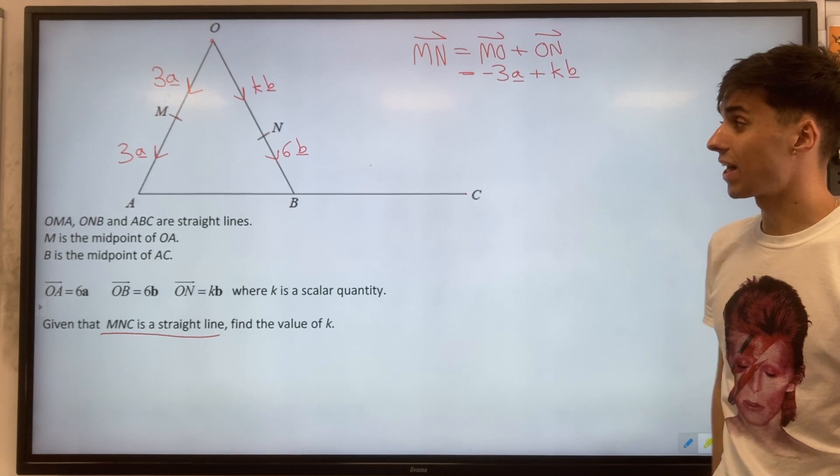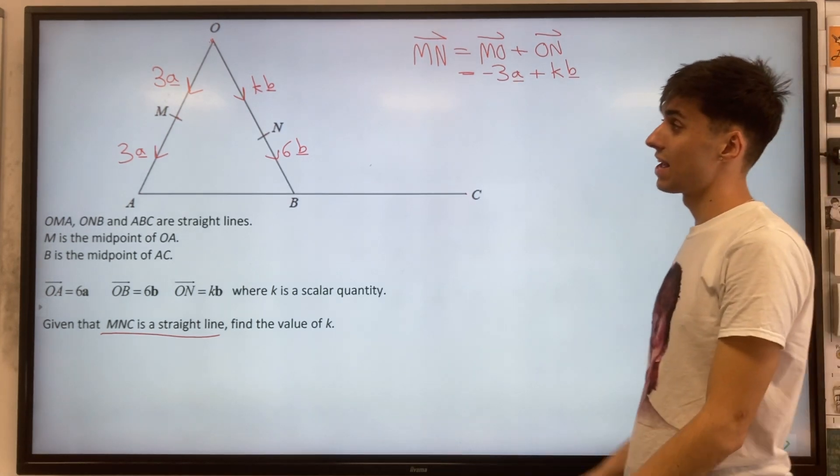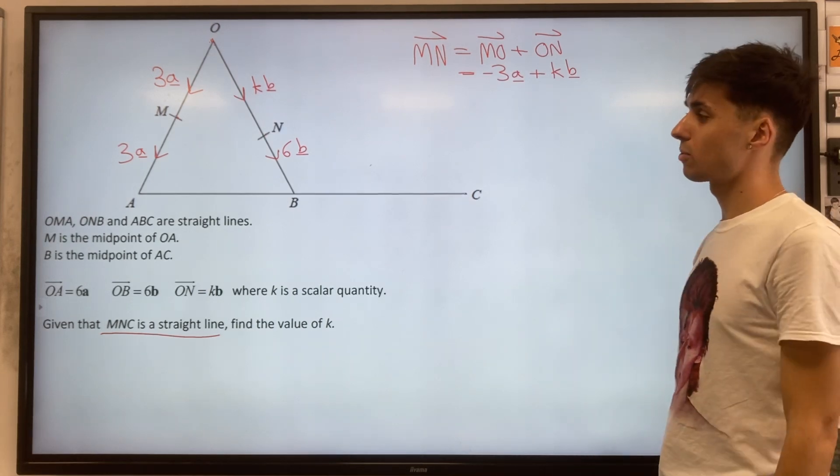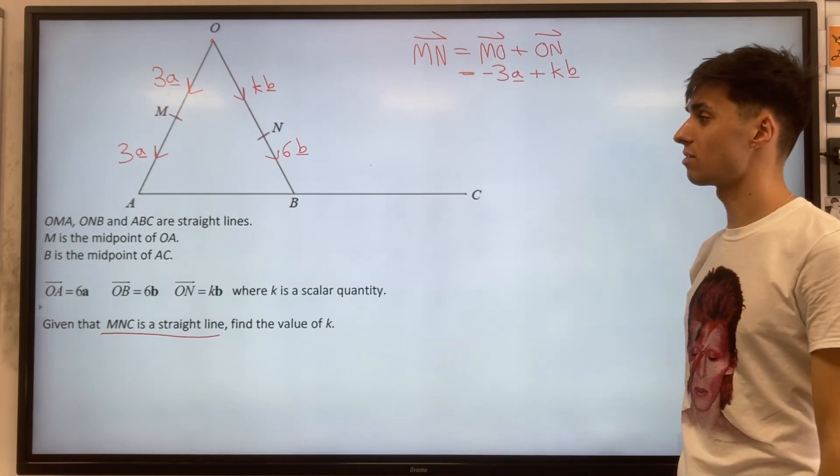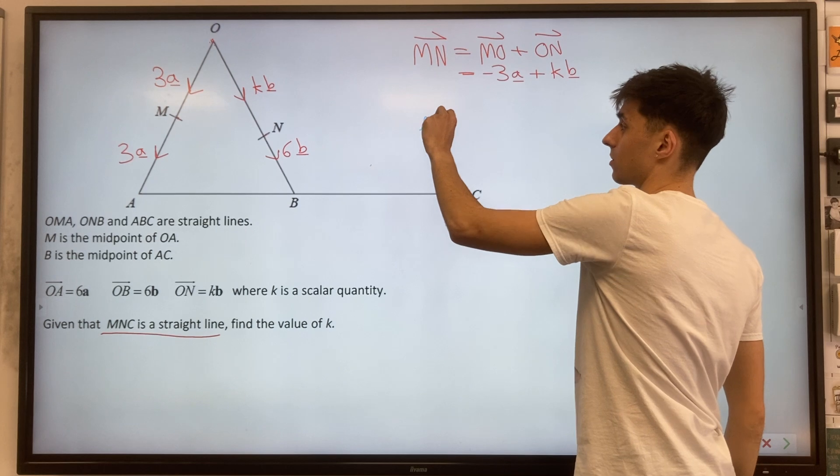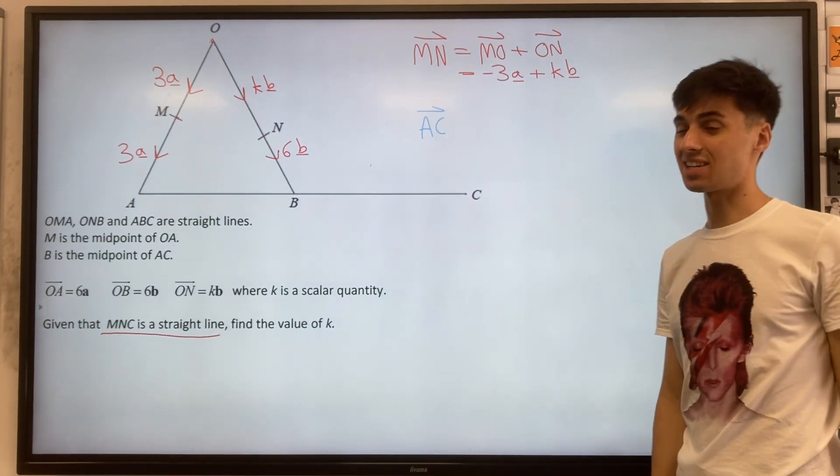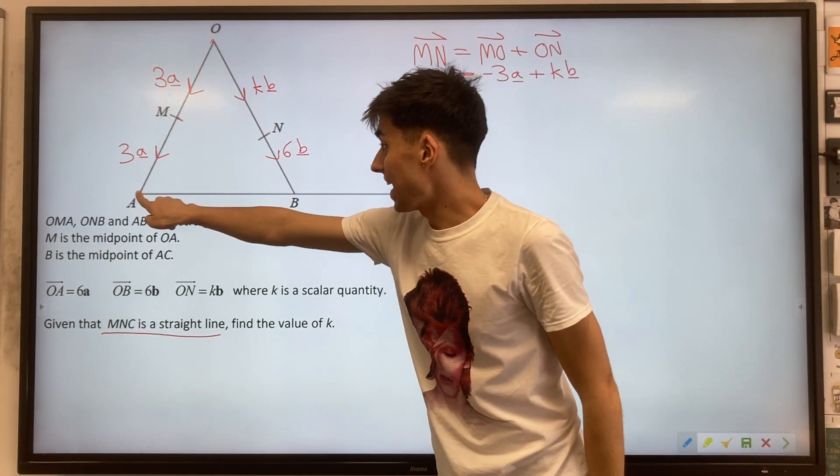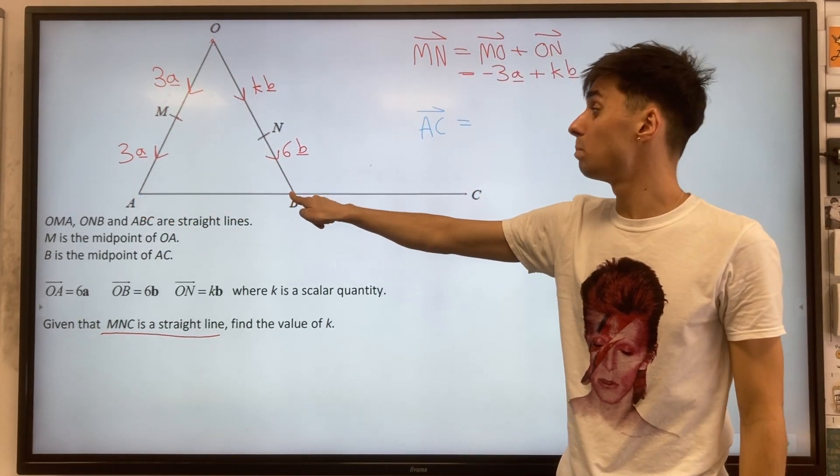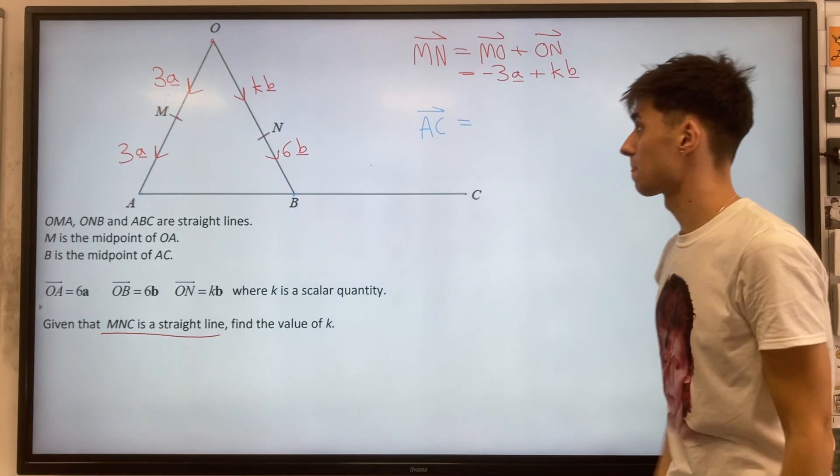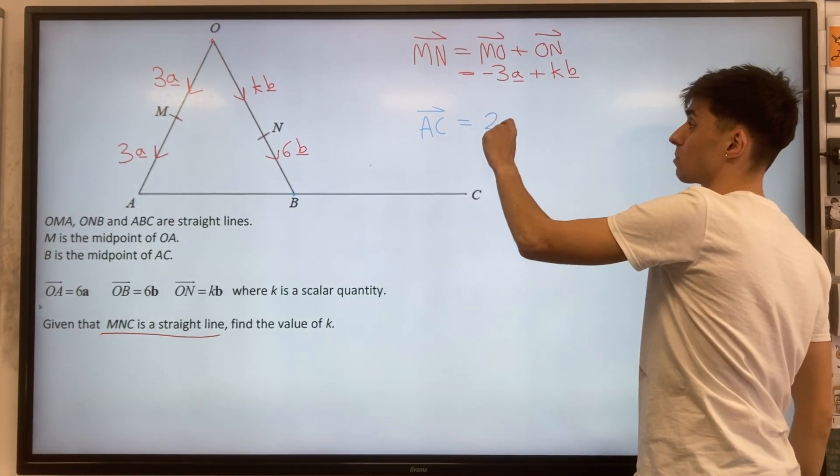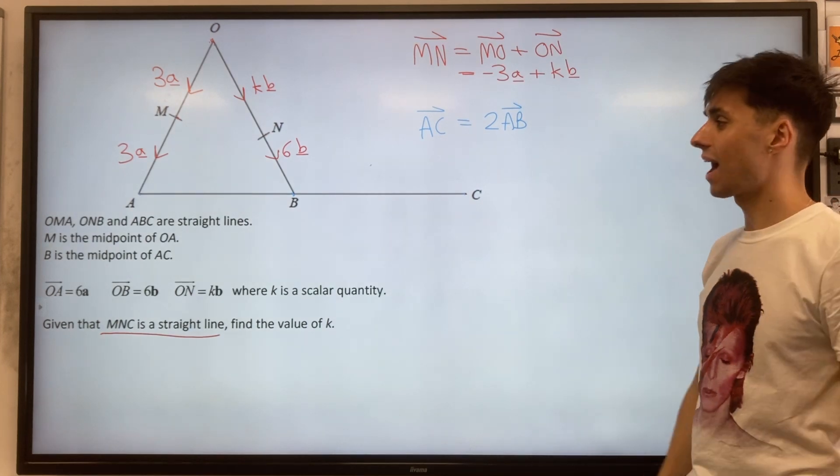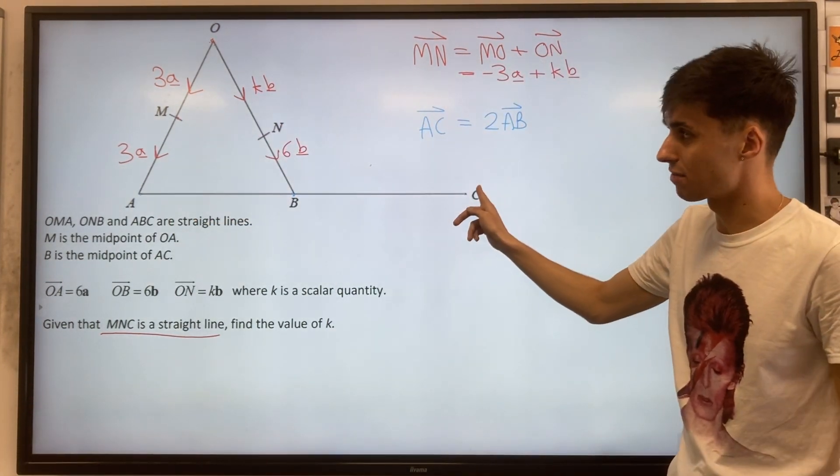Moving on to our second part then, where we'd like to find MC. But actually, to go from M to C, we need to consider another vector first. We're going to consider going from A to C first. The reason why is because AB we can do. We know B is the midpoint of AC, so AC must be two lots of AB.